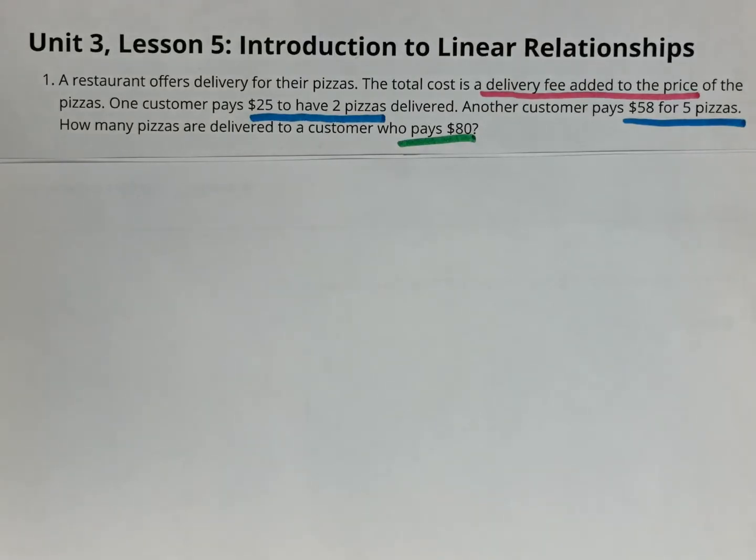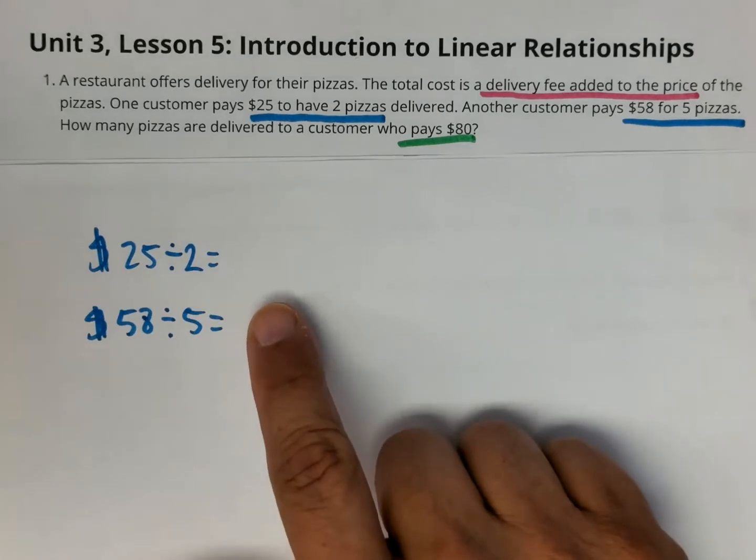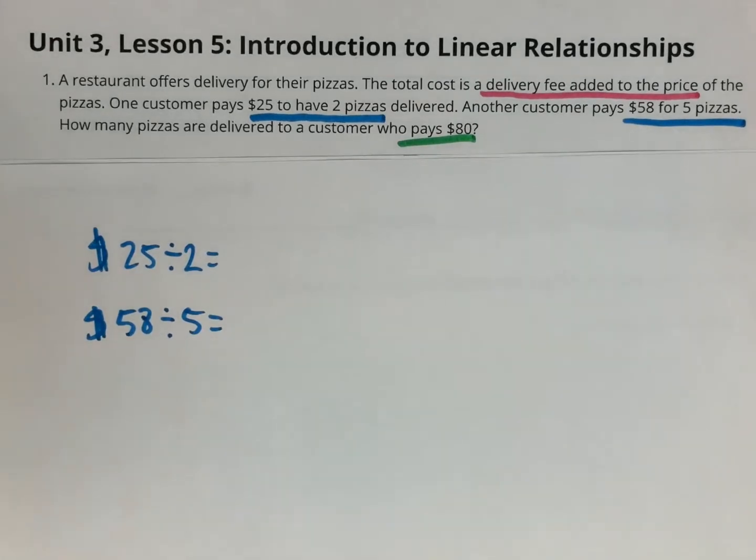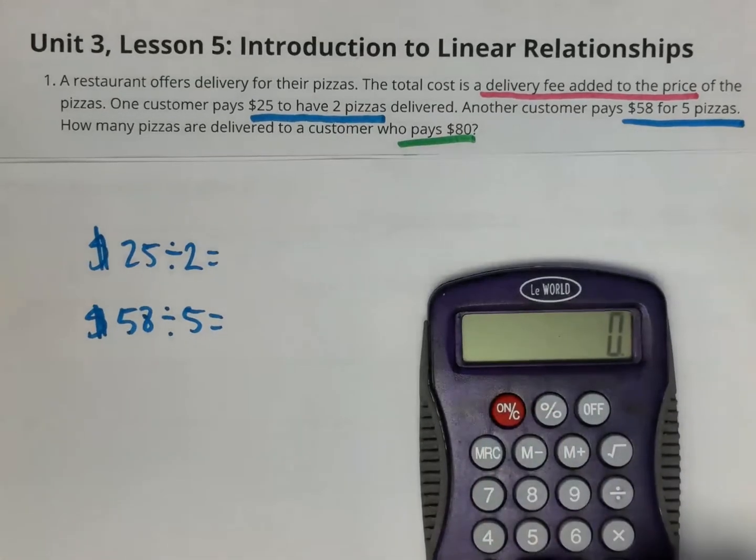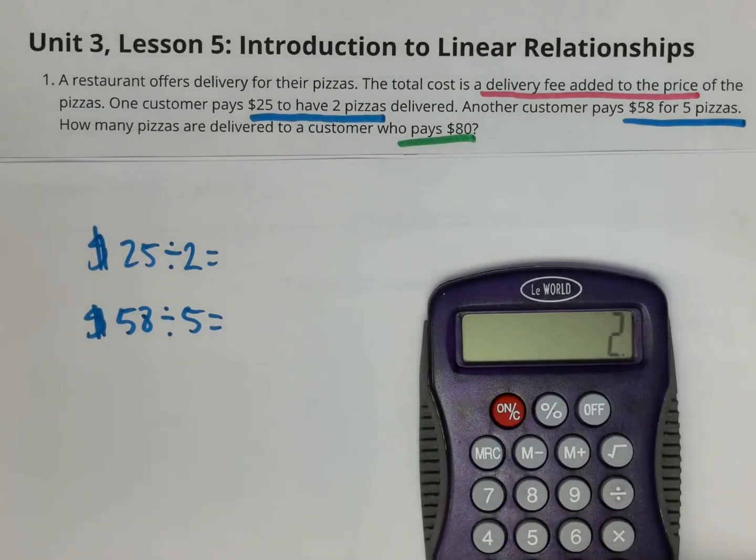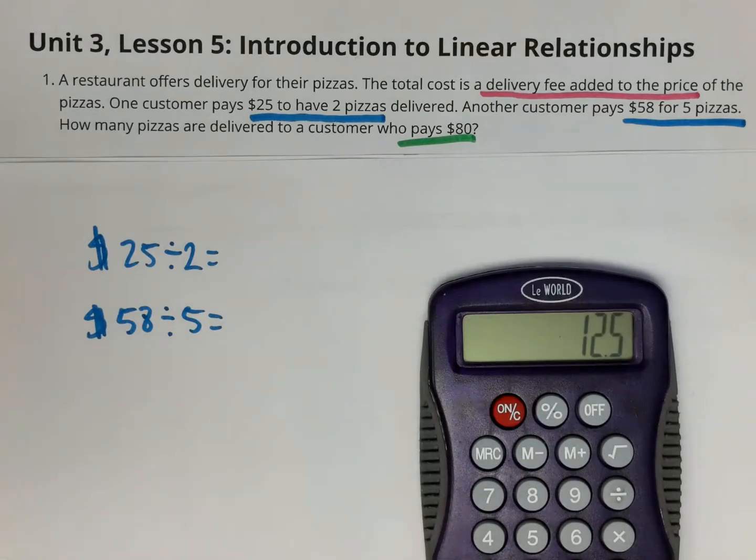Okay. Now this relationship, what we're seeing in this lesson is that this is not proportional. You're going to see right now why this is not proportional. I set up these two division problems, 25 divided by 2 and 58 divided by 5, from those numbers that are in the problem. When I do the division, 25 divided by 2, I get $12.50.